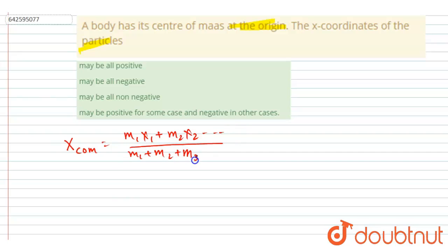So it is said that it is at origin, so x-coordinate will be zero. Now you can see what you get: m1*x1 plus m2*x2 plus m3*x3 and so on is equal to zero, right? Okay, so if I say all the particles are at positive coordinates, right, so I am saying that the x-coordinate of all the particles is positive.